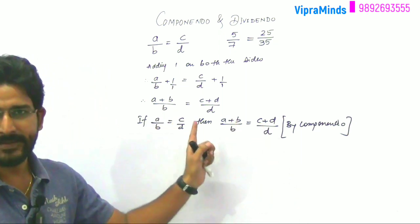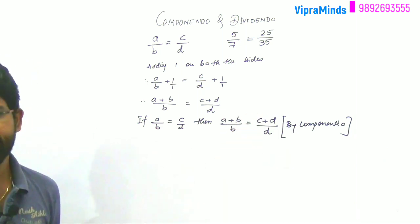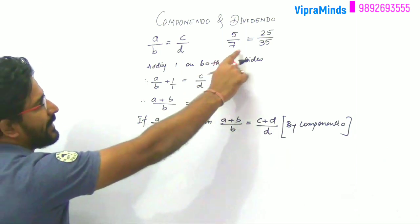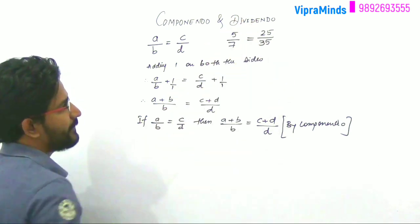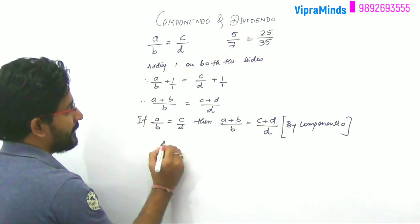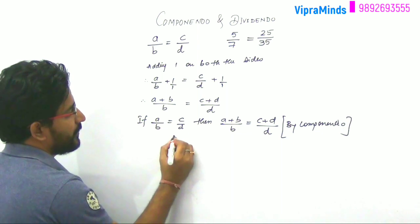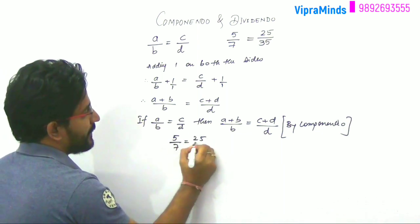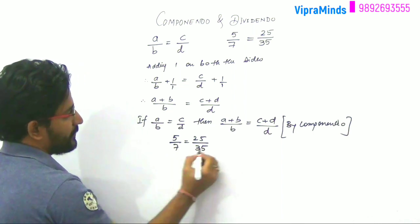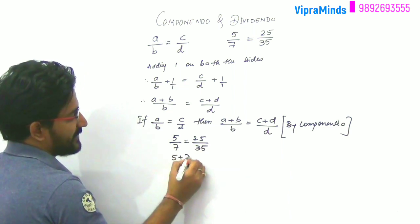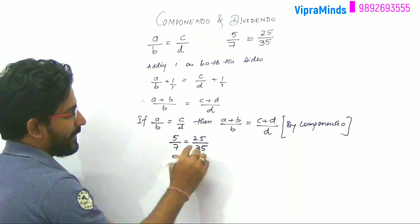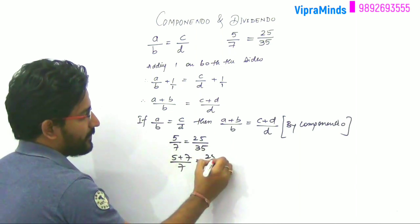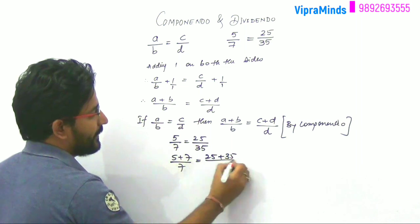This property being a plus b by b will be equal to c plus d by d. Now if I have this example, these two ratios are equal, I will get 5 by 7. If I use the same property here, 5 by 7 equals 25 by 35. So what will happen? 5 plus 7, that is b add, divide by 7. The same way, 35 up add, 25 plus 35 by 35.